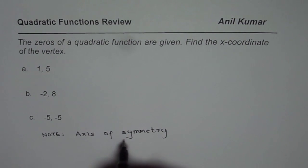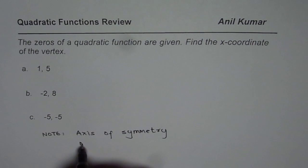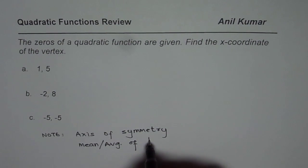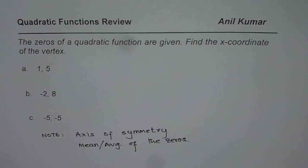Since the x-coordinate lies on the axis of symmetry, we need to find the average or mean of the zeros. So that is the key thing.